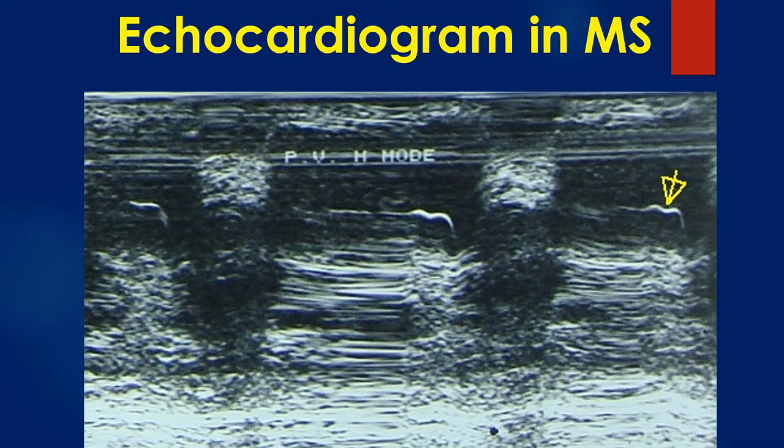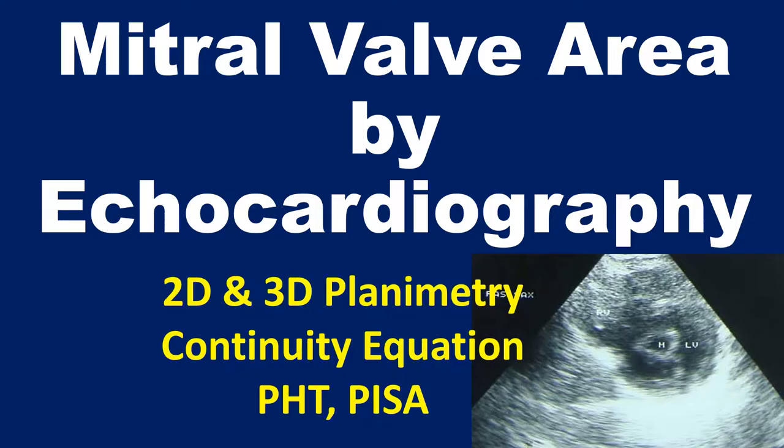A mid-systolic notch may also appear in severe pulmonary hypertension. When Doppler echo was not available, M-mode of the pulmonary valve was an important tool to assess pulmonary hypertension.